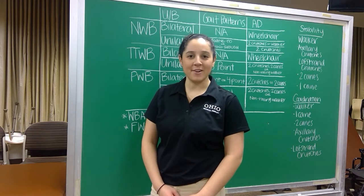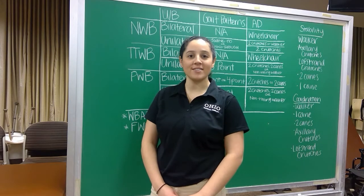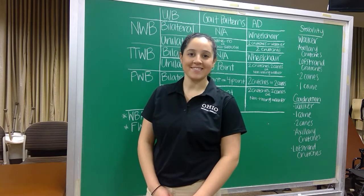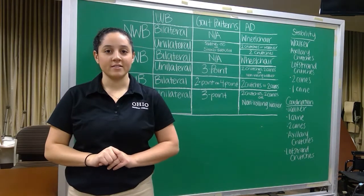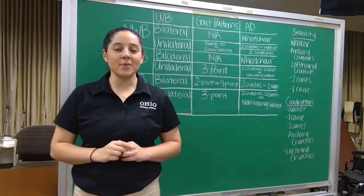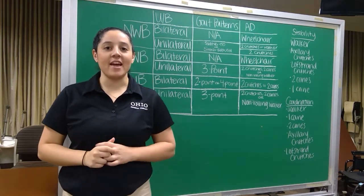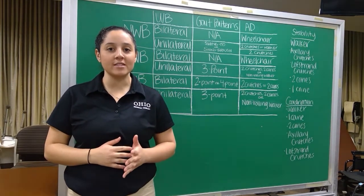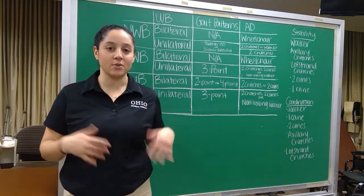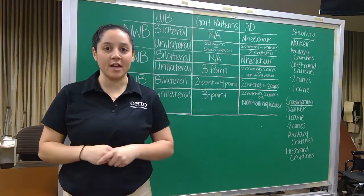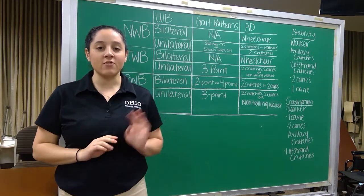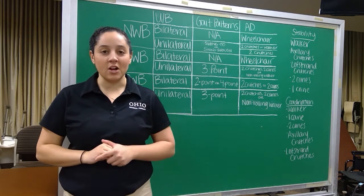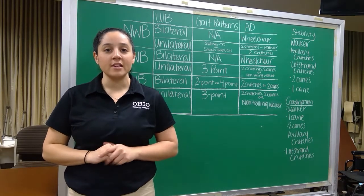Hi, my name is Jackie Pliciano and I'm a student physical therapist. Today I'm going to be teaching you how to assign different assistive devices to different weight-bearing statuses. The first thing we're going to talk about are weight-bearing statuses — the amount of weight you can apply onto a lower extremity during ambulation or standing. There are five types we're going to cover, starting with non-weight-bearing.